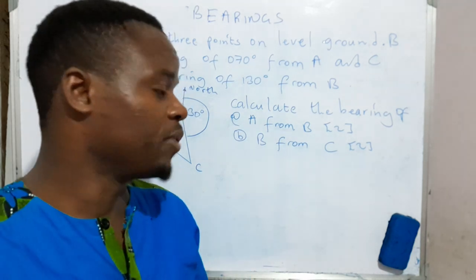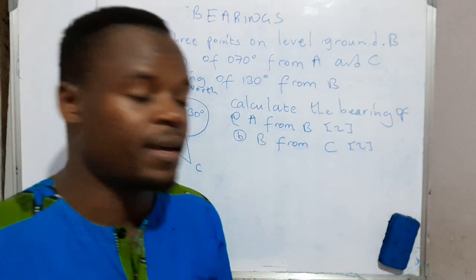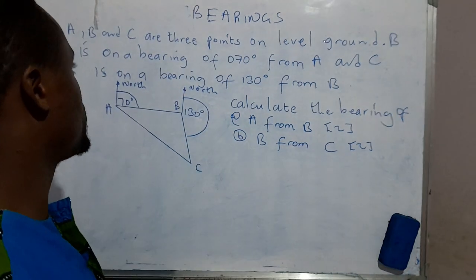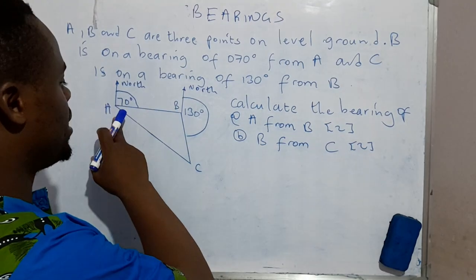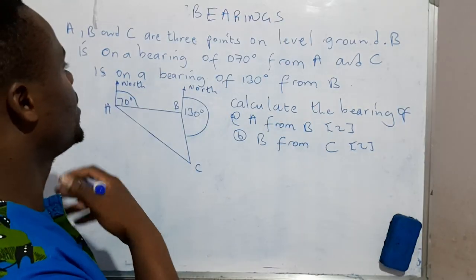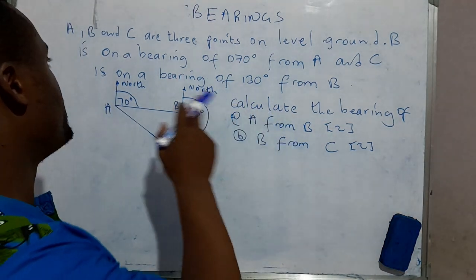Alright, so now let's take a ride. We have this question here. They're saying A, B, and C are three points on level ground.